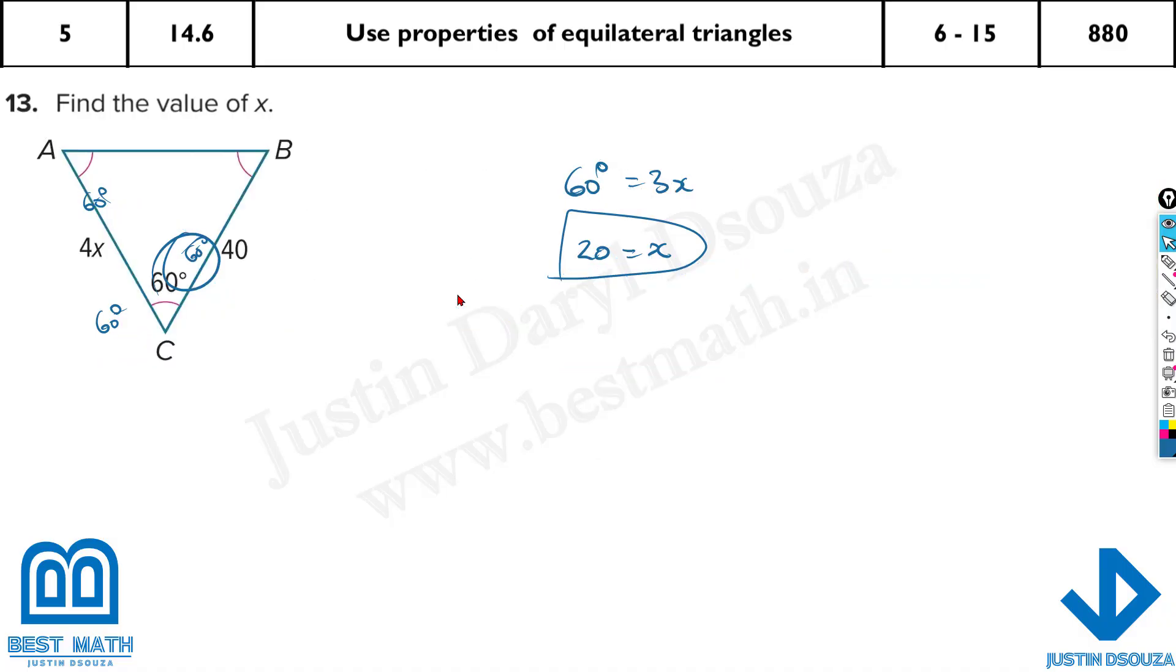What about this one? Again, we know it's an equilateral because all are same. But they're not telling us to find the sides. They're asking x value. So x value is basically 4x equals 40. Why? Because all sides also are equal in an equilateral triangle. So divide both sides by 4. x will be equal to 10. That's it.